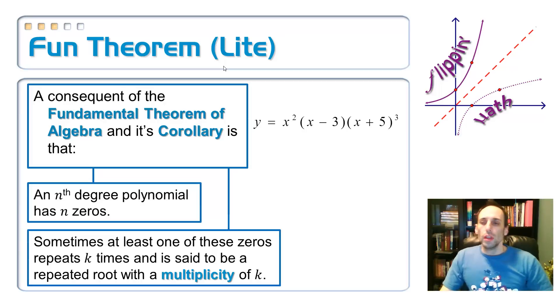So, here it is all summarized. Fun theorem light. A consequent of the fundamental theorem of algebra and its corollary is, first of all, whatever the degree of the polynomial is, that's how many zeros or solutions you have. Second part is, if it repeats k times, then it has repeated solution or multiplicity of k. So, look at the equation. This will wrap it all up here. Look at the equation. I got y equals x squared times x minus 3, x plus 5 cubed.